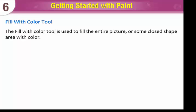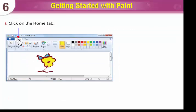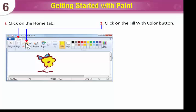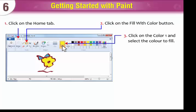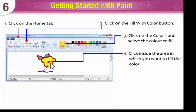The Fill with Color tool is used to fill the entire picture or some closed shape area with color. To use the Fill with Color tool, click on the Home tab. Click on the Fill with Color button. Click on Color 1 and select the color to fill. Click inside the area in which you want to fill the color. The color will get filled inside the shape.